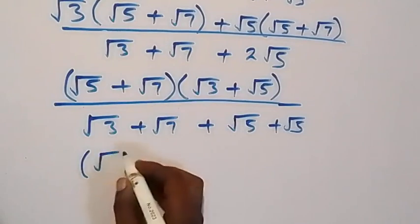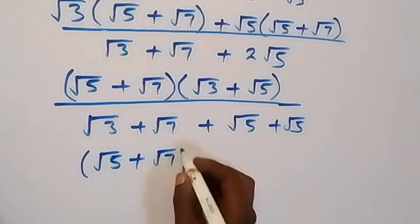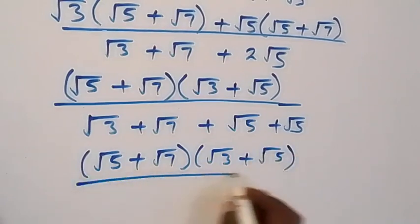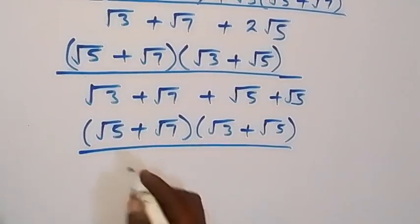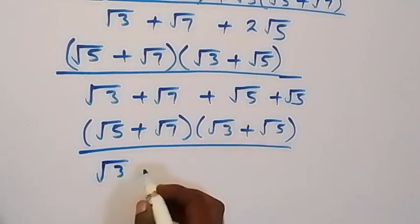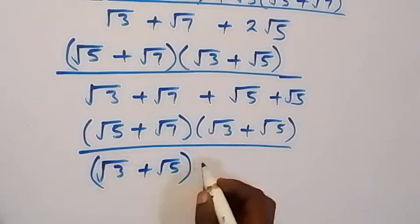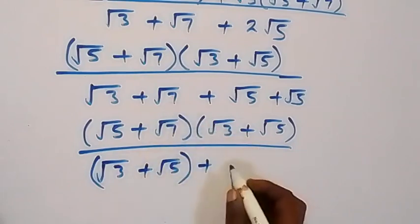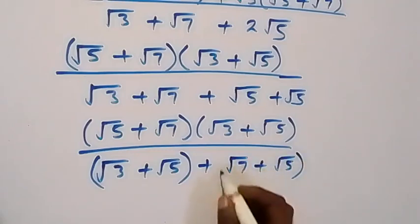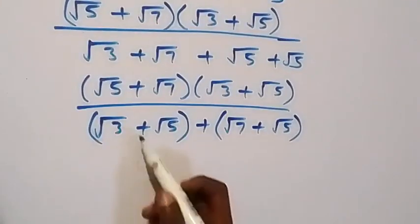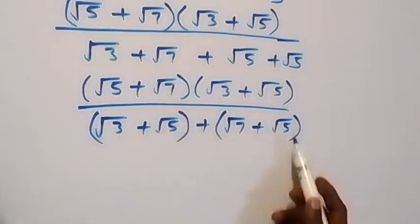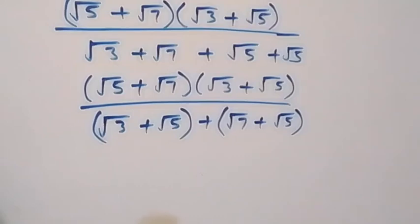And this can be written as: we have root 5 plus root 7 multiplied by root 3 plus root 5, then divided by — here we can group this and this becomes root 3 plus root 5 together, then plus now we have root 7, then plus root 5 as well together. Such that we have the same thing in this bracket and this bracket, and also in this bracket and this bracket — we have the same thing now.